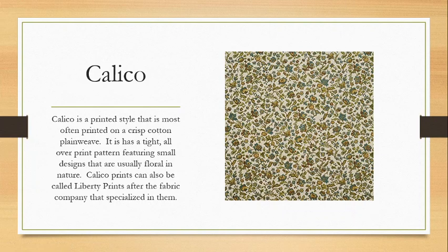Next we have calico — a printed style most seen on a crisp cotton plain weave, typically featuring a tight all-over print with a small design, usually floral in nature. Calico prints can also be called liberty prints, after an English fabric company that specialized in printing them. Calico gets its name from roots in Calcutta, because these prints were traditionally Indian in nature.